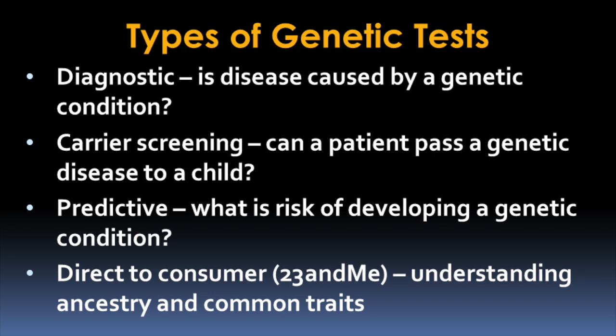When a patient gets their genome sequenced, it may be for a variety of different reasons. That individual may have some sort of disease that's suspected to be inherited, so they may be looking for a genetic cause. Other individuals may get their genome sequenced because they're concerned about risk for disease — they may want to know if they might have a child with a disorder, develop a later onset disease like breast cancer, or suffer from a hereditary cardiac disorder like hypertrophic cardiomyopathy. And some individuals may just want to understand their ancestry.